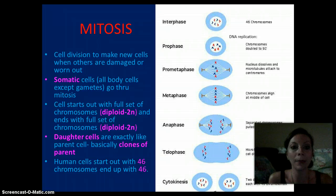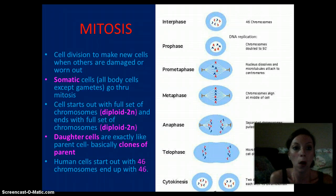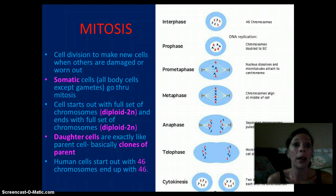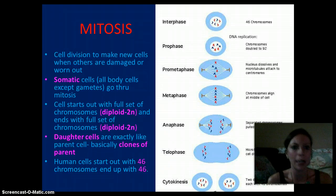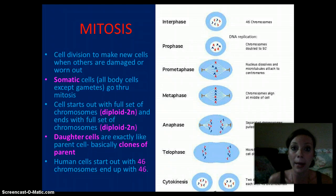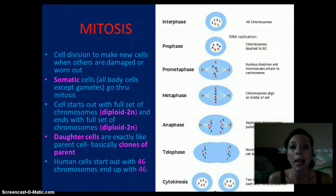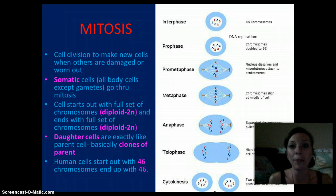Mitosis is a process used to make new cells. It's very helpful for organisms because they need to replace their cells often. Think of your skin cells — if you get cut or scraped, we need to replace those cells quickly and rapidly. So this replaces somatic cells, which are all body cells except for the gametes, which are the sperm and egg.